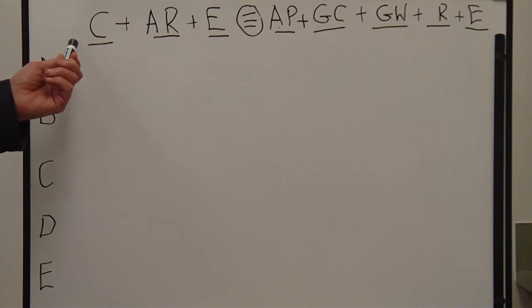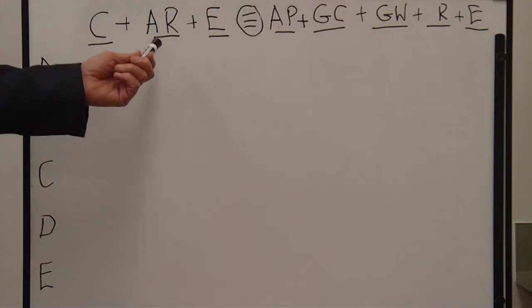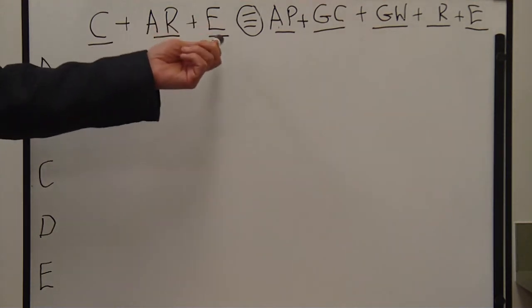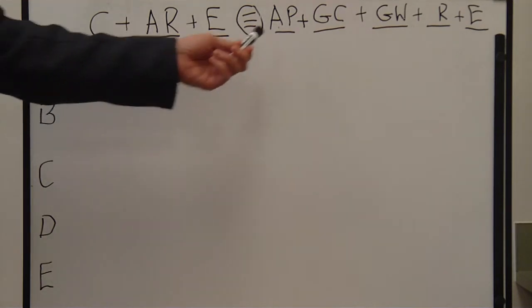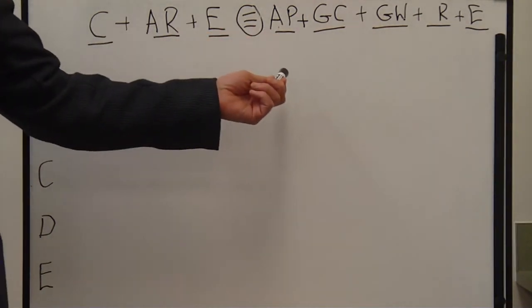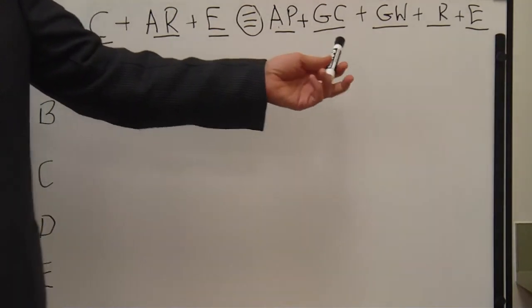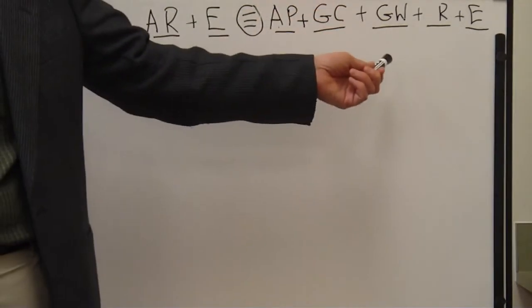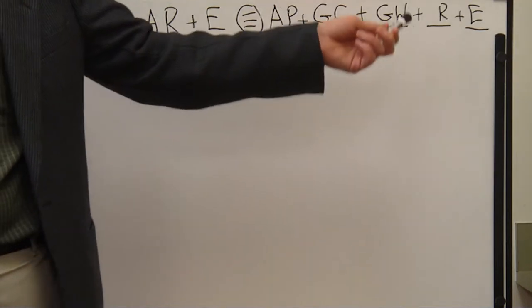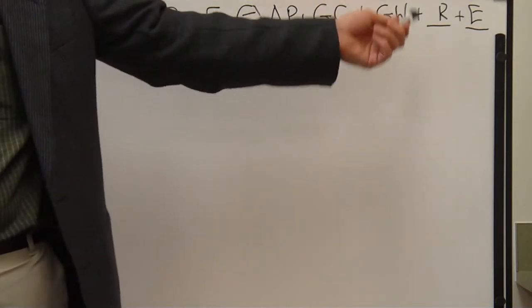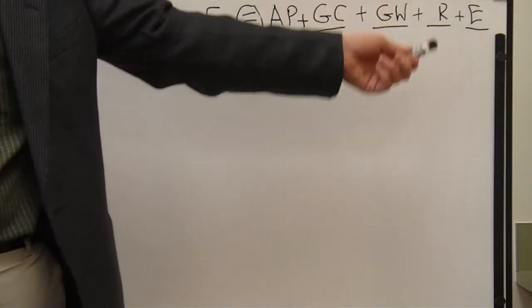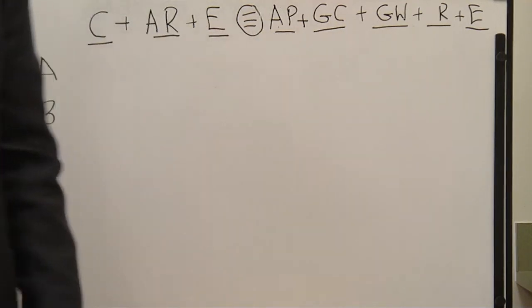The C stands for cash. The A, accounts receivable. The E, equipment. AP is accounts payable. GC is gold capital. GW is G withdrawals or gold withdrawals. R is revenue. E is expense.